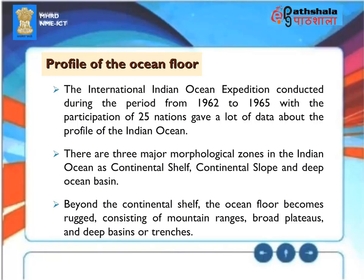Profile of the ocean floor. The international Indian Ocean expedition conducted during the period from 1962 to 1965, with the participation of 25 nations, gave a lot of data about the profile of the Indian Ocean. There are three major morphological zones in the Indian Ocean: continental shelf, continental slope and deep ocean basin. Beyond the continental shelf, the ocean floor becomes rugged, consisting of mountain ranges, broad plateaus and deep basins or trenches.